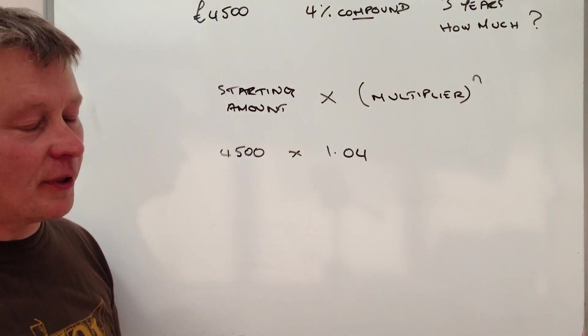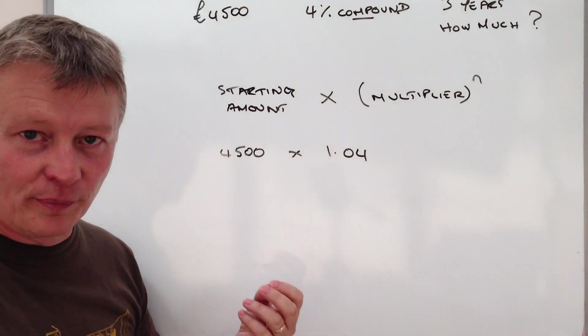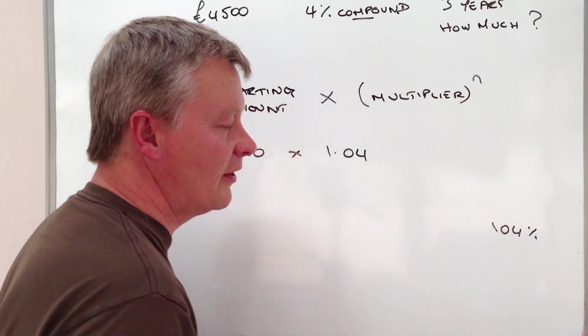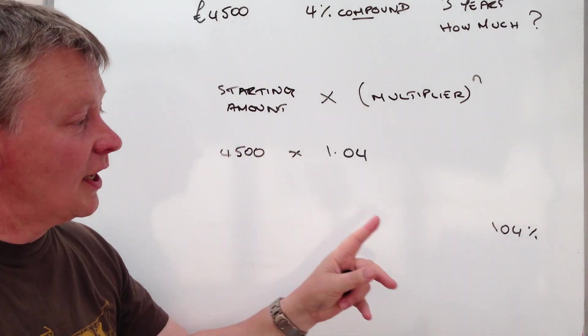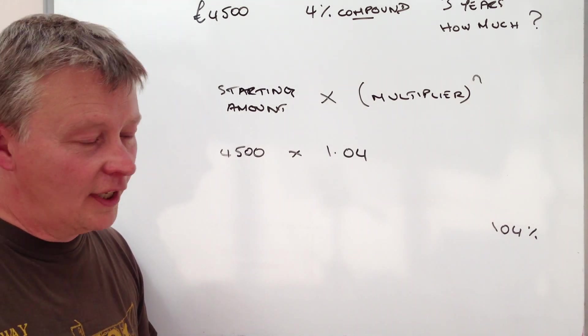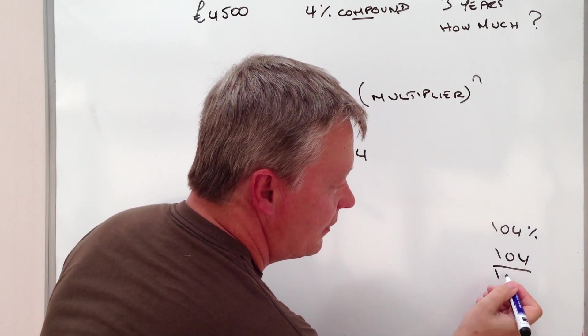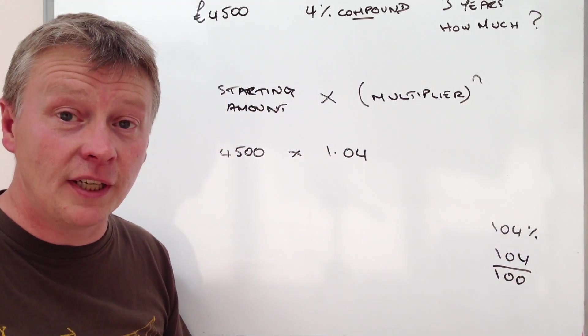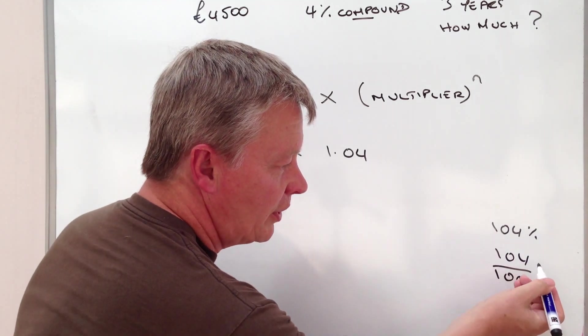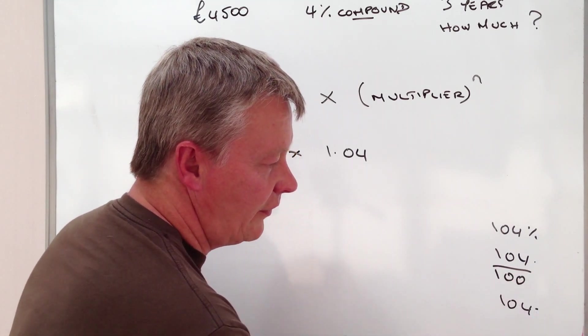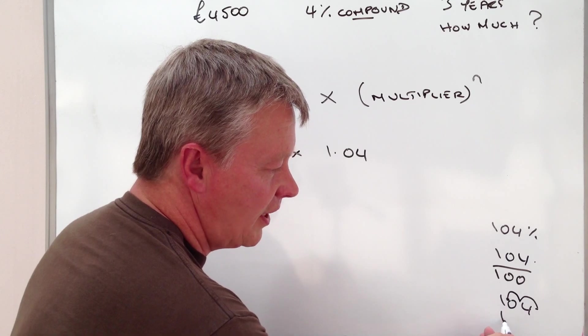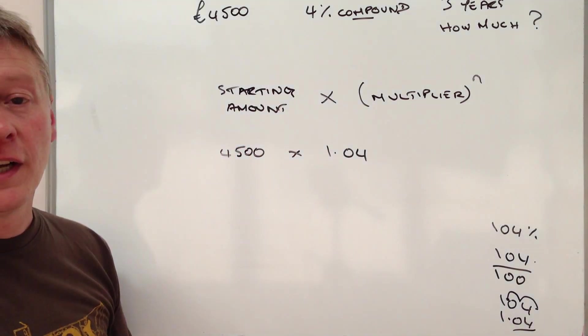Now the reason it's 1.04 is because effectively this is 104%. I'm just going to put it down the bottom here. This is 104%. In other words, it's 100%, which is the starting amount, and then 4% additional that you're going to get. Well, 104%, if we write that as a fraction, we can write that as 104 divided by 100, because that's what percent means. If we divide something by 100, then we're going to move the decimal point across. The decimal point currently is here, so there's 104. Because I'm divided by 100, I'm going to move two decimal places, once, twice. So that gives me 1.04.